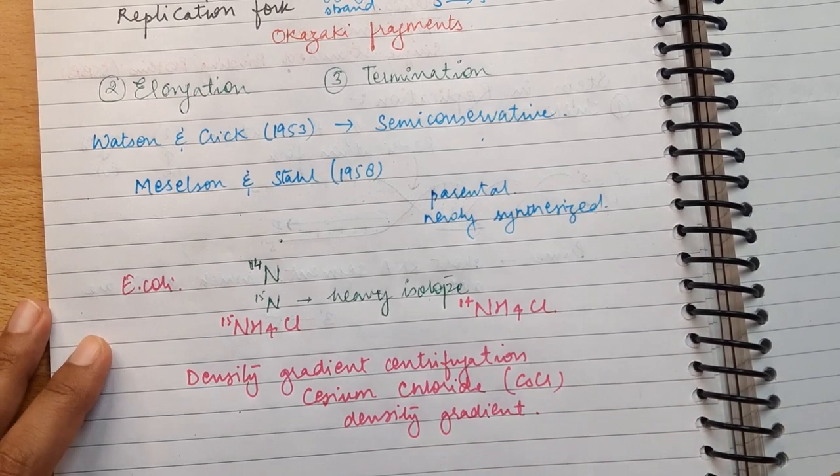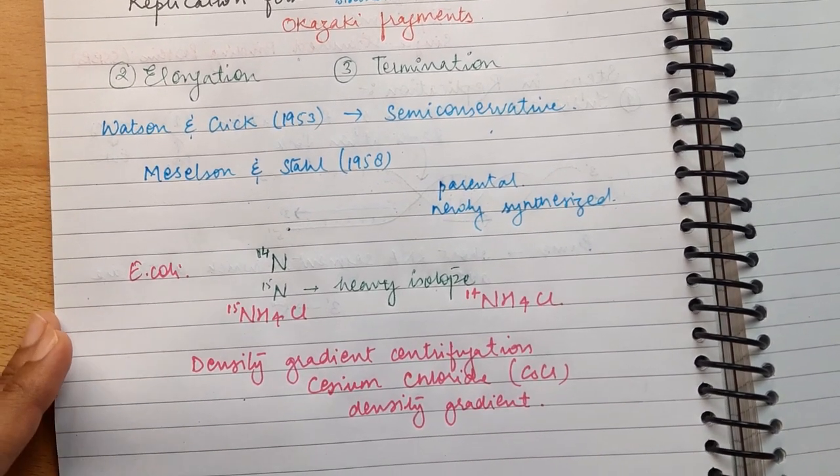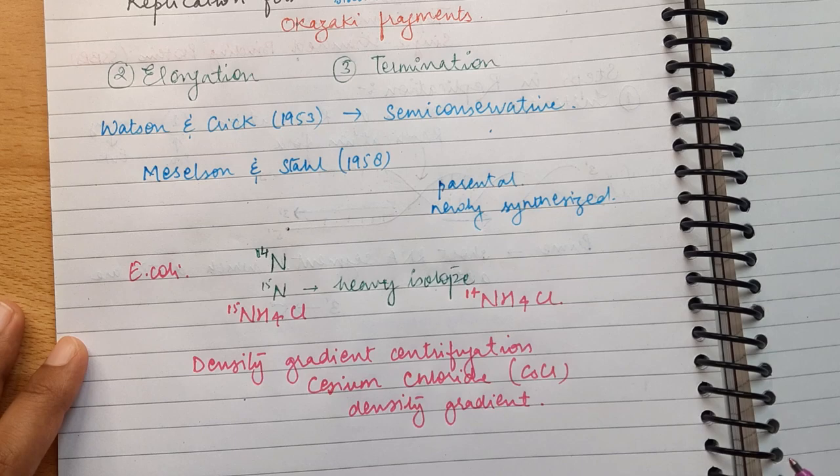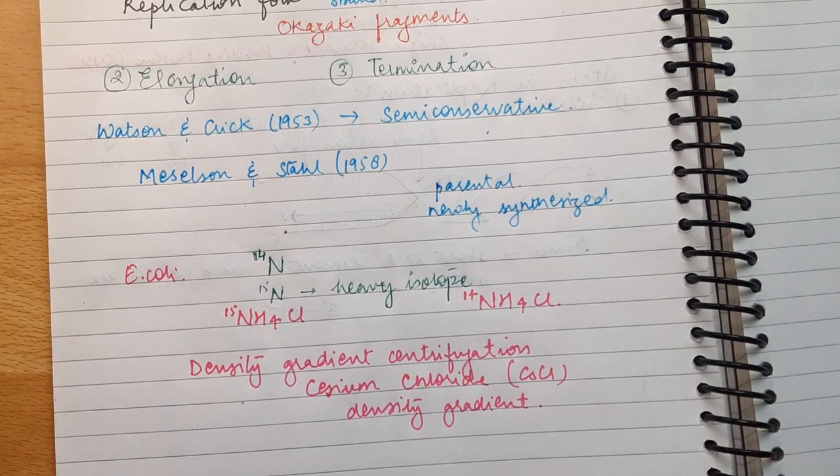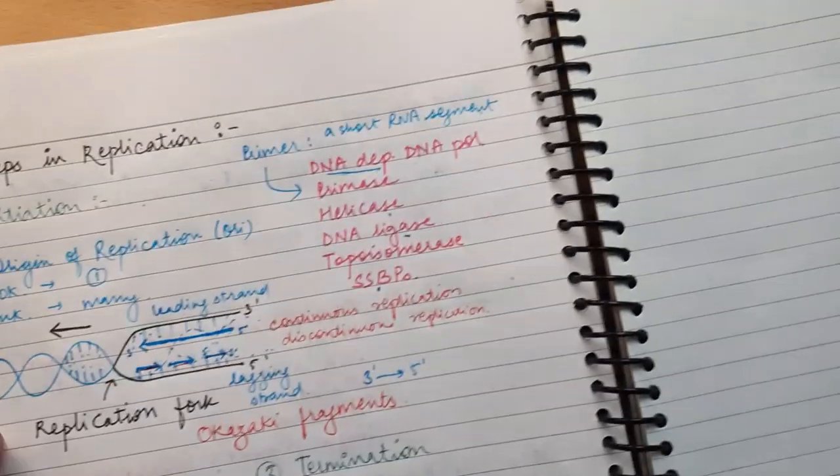Now they found that the DNA from one generation after the transfer of N15 to N14 had a hybrid or intermediate density, but the one from second generation contained equal amounts of hybrid and light DNA.